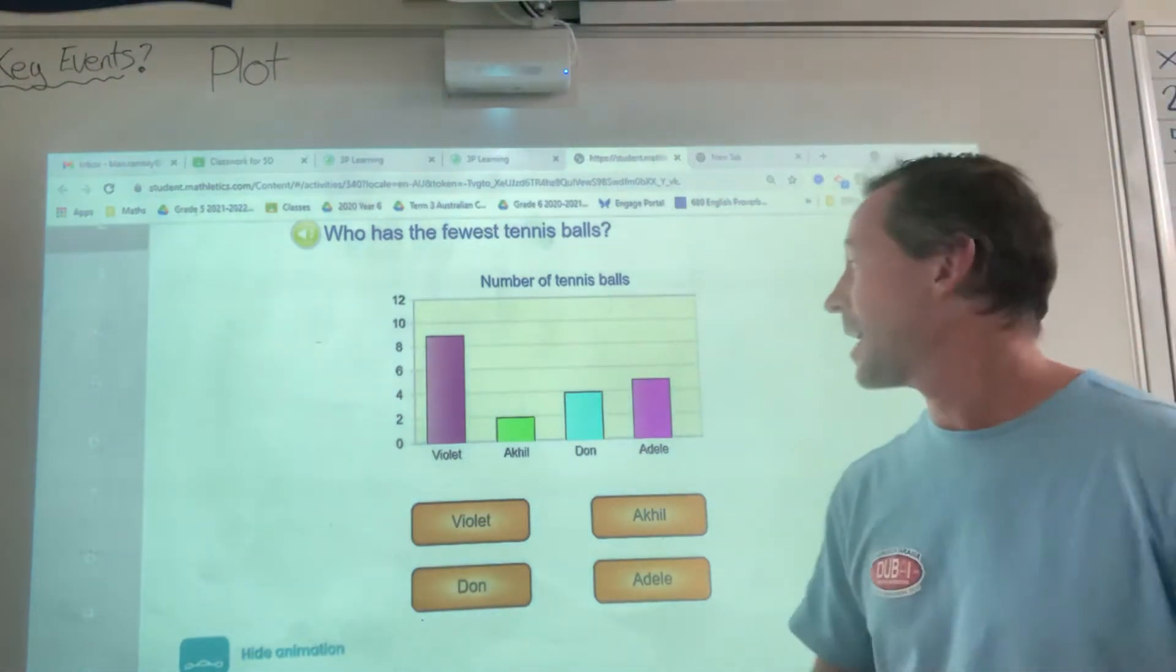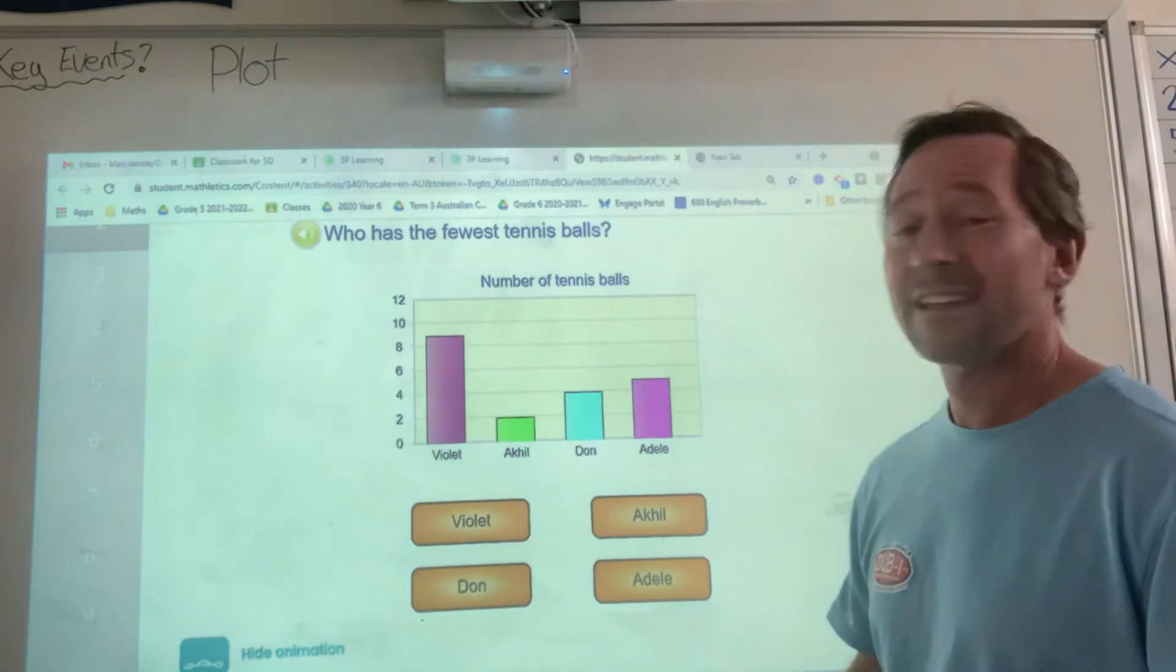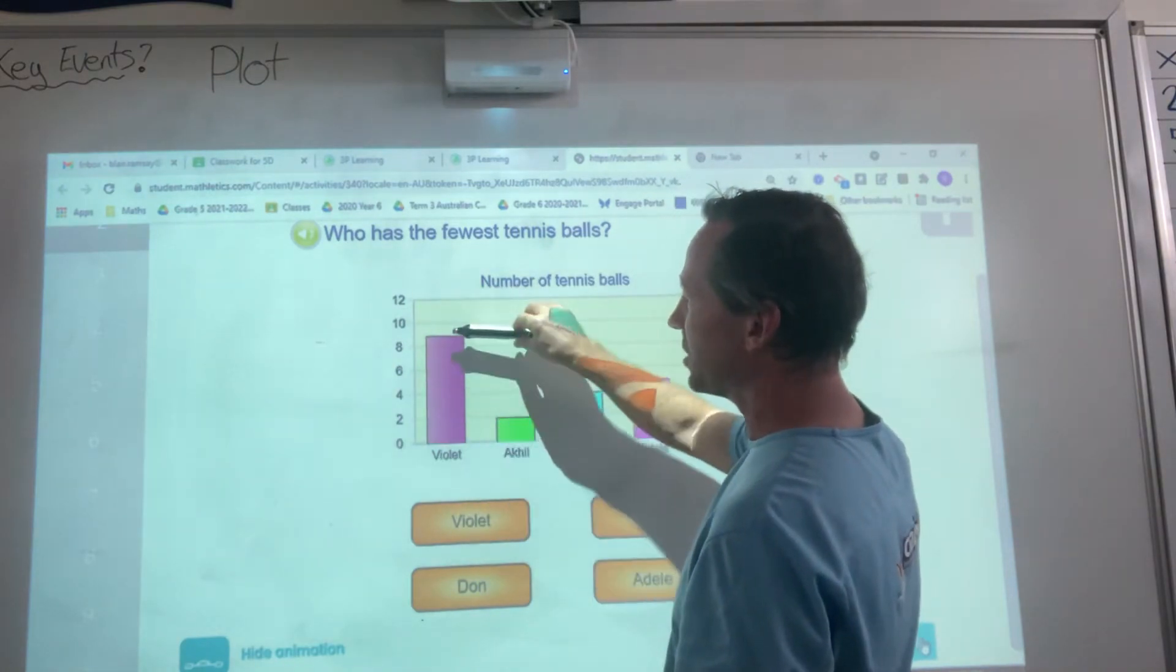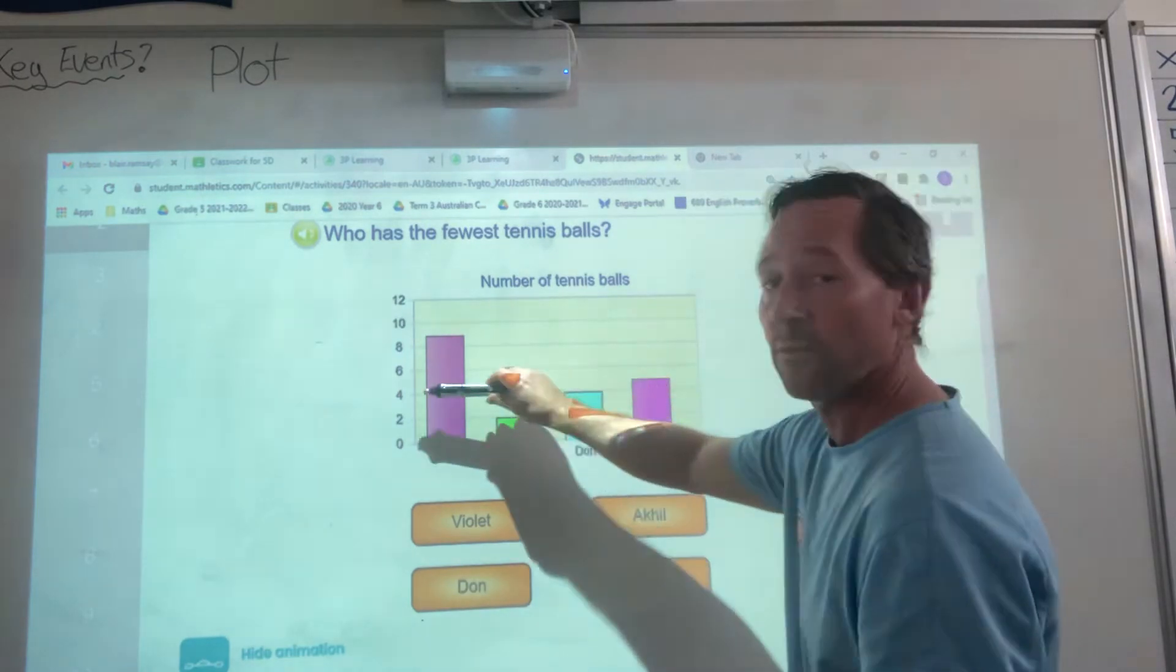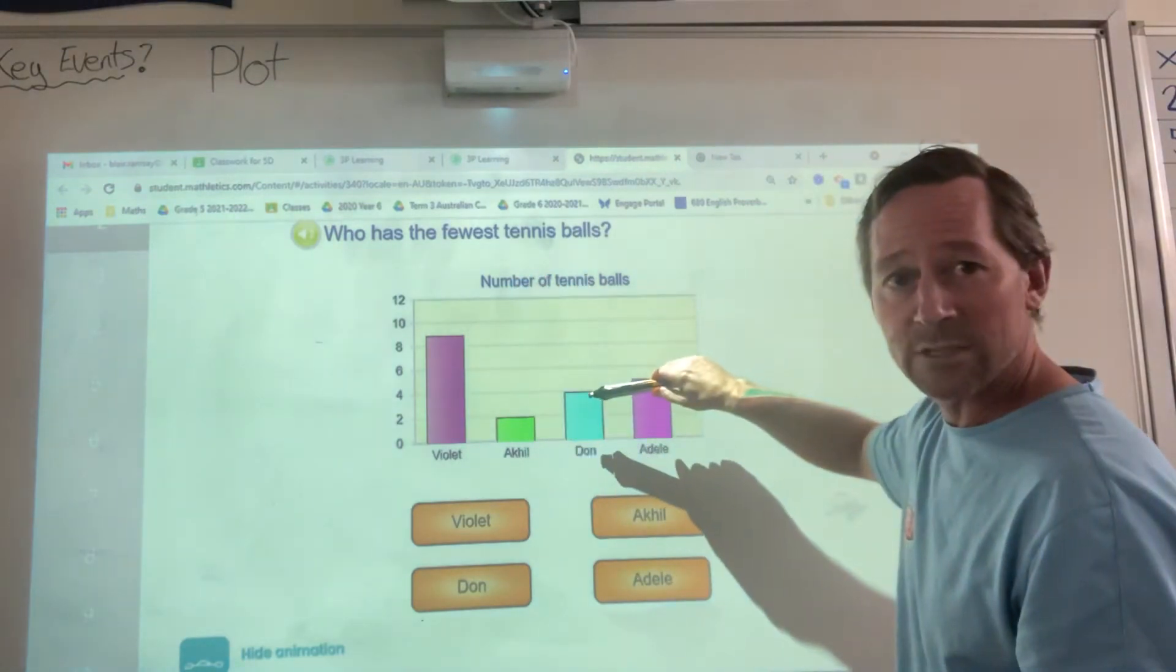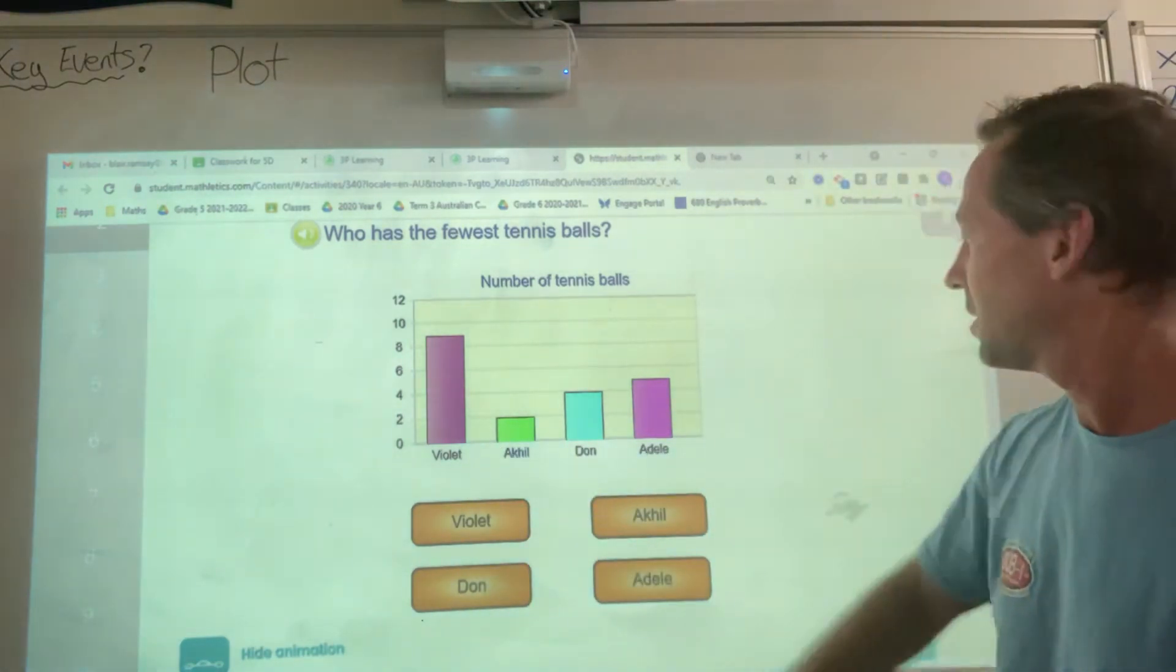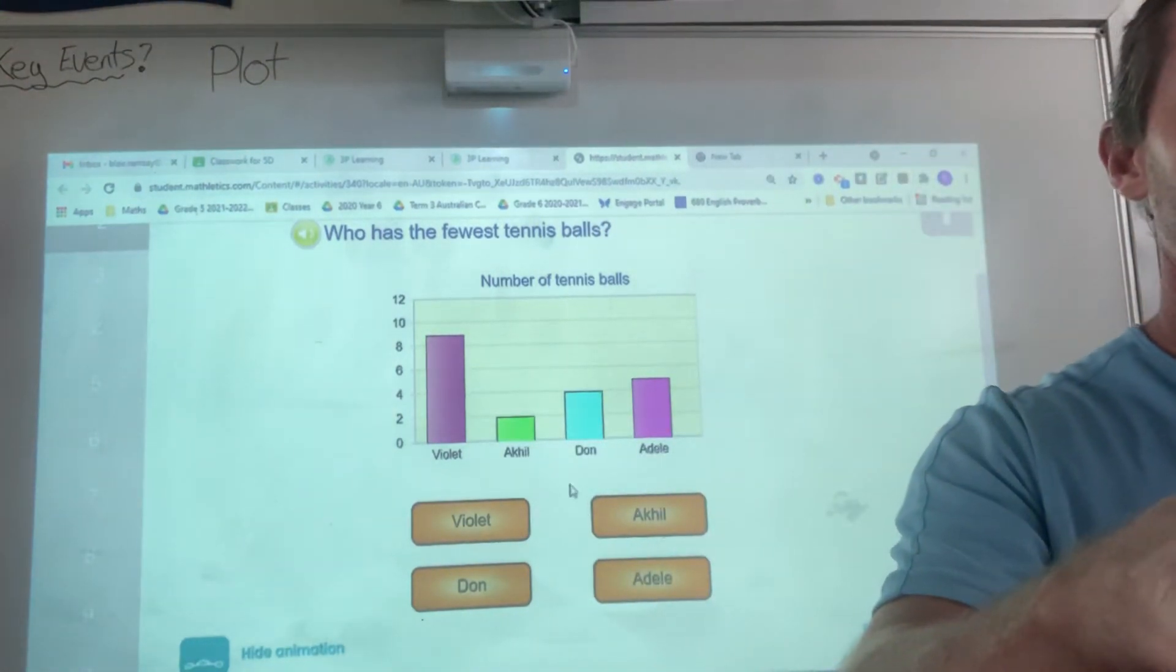Another question might be, how many more tennis balls does Violet have than Don? So, then I have to look at Violet. The scale's going up in 2s, but this one's saying, it's like 9. Don has 4, so then I'd say 9 minus 4, or 9 take away 4, would give me 5. So, the difference would be 5. So, Violet has 5 more tennis balls than Don. But, back to our original one, Akil is our fewest tennis balls.